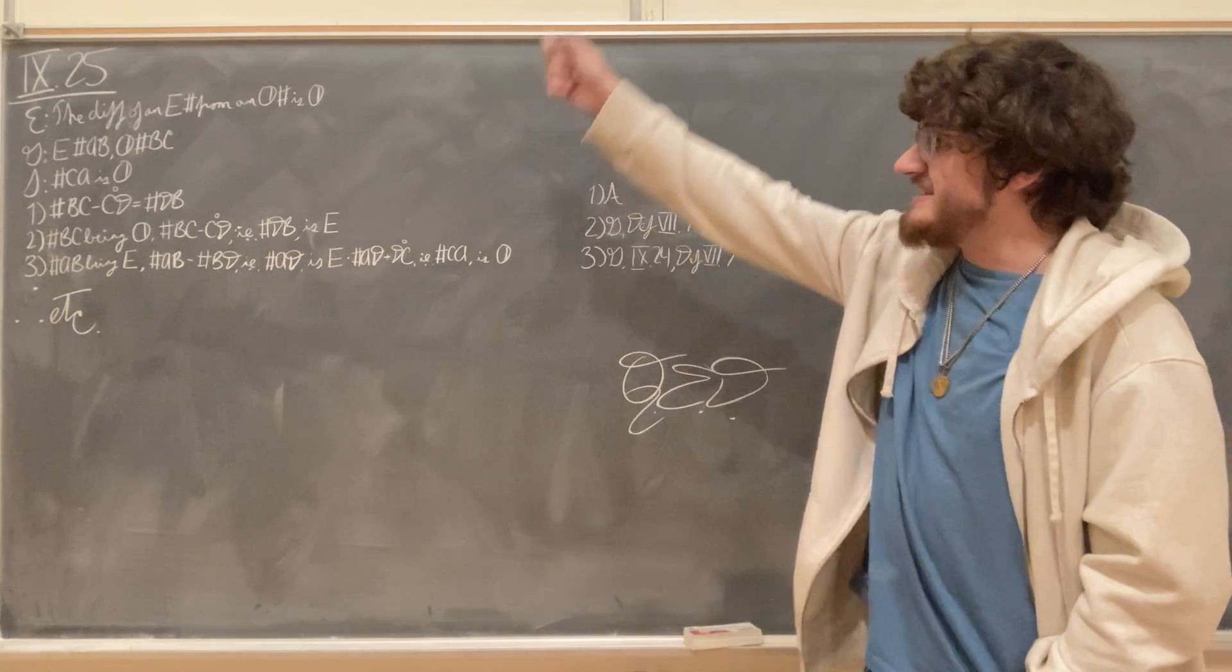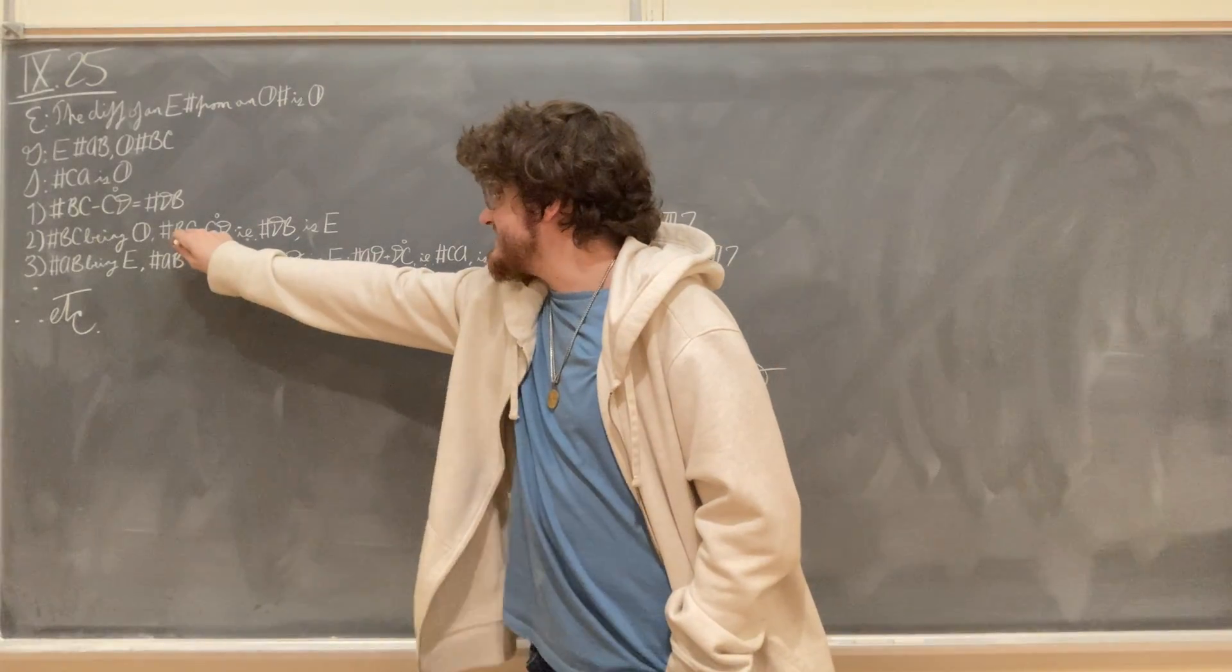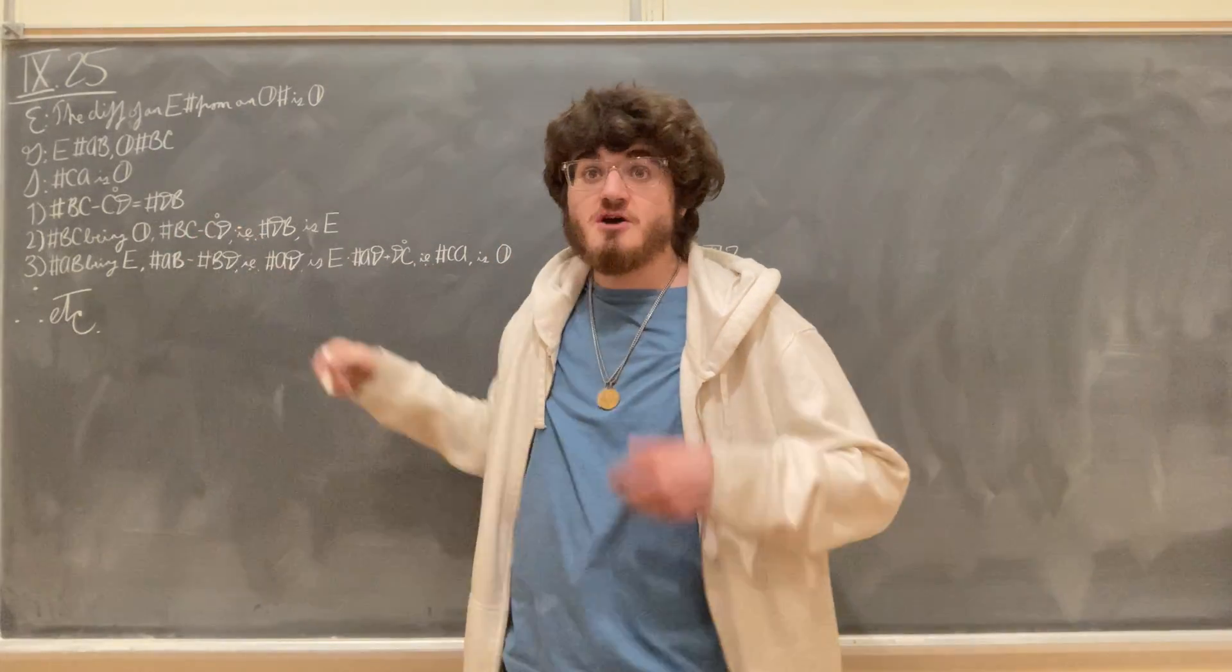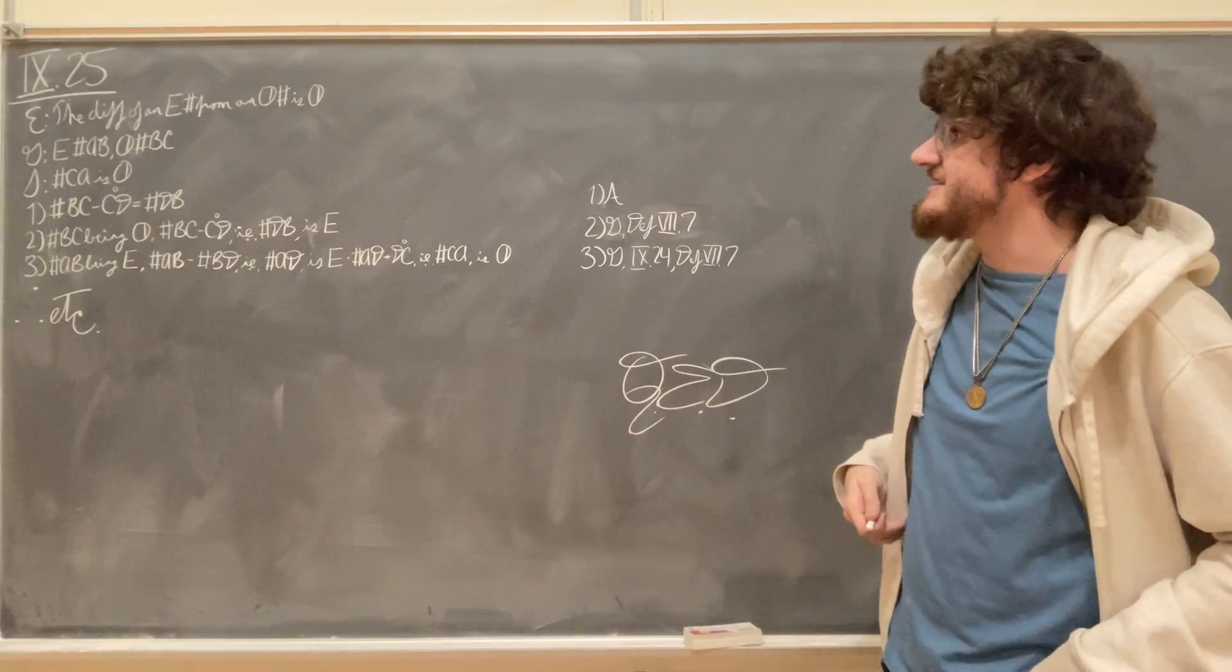So that because the number B, C is an odd number, the difference of the odd number B, C from the unit C, D, which is the number D, B, is an even number. So D, B is even.